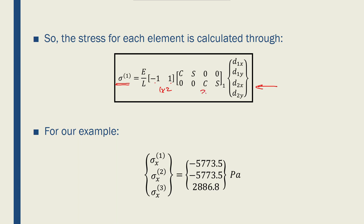And this is a 2 by 4 matrix. And this is a 4 by 1 vector. As a result, it will give me a 1 by 1, which is a scalar. So I can use that for every element in the truss.